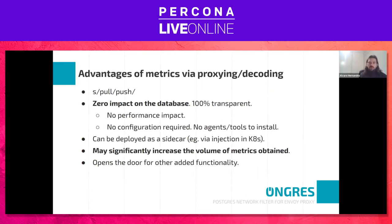Obviously on certain environments such as Kubernetes, this can be deployed as a sidecar. We can even inject a sidecar on some instances and then transparently proxy the traffic and transparently provide all these metrics without disrupting existing clients and servers.